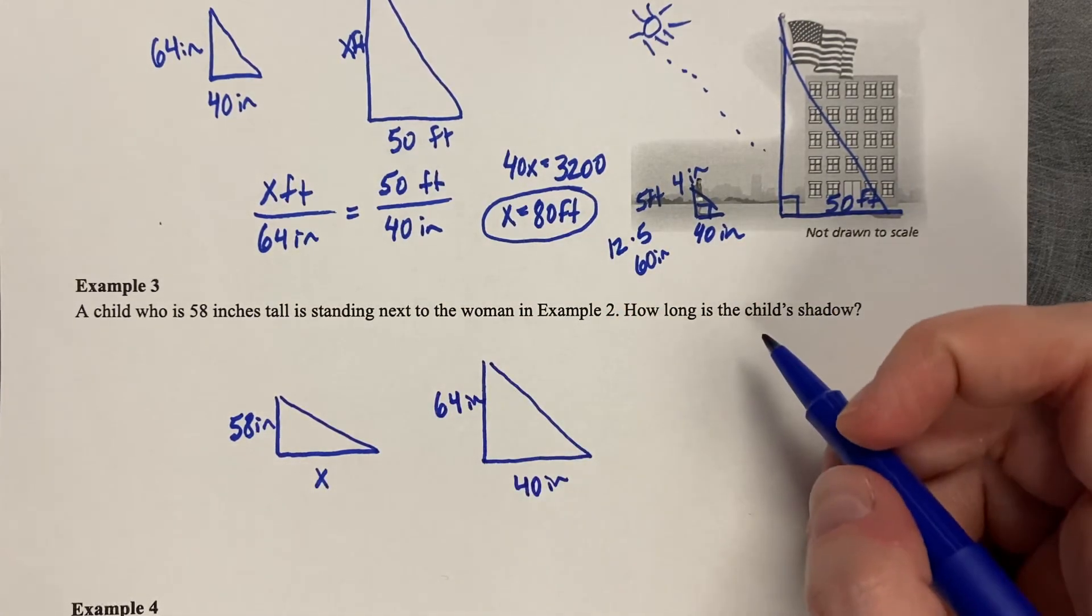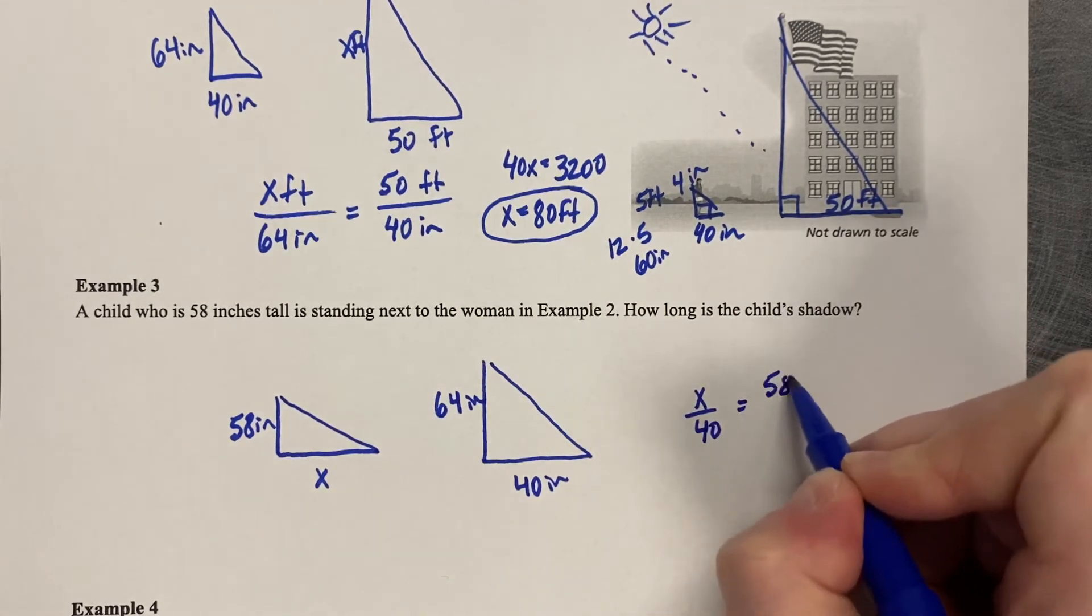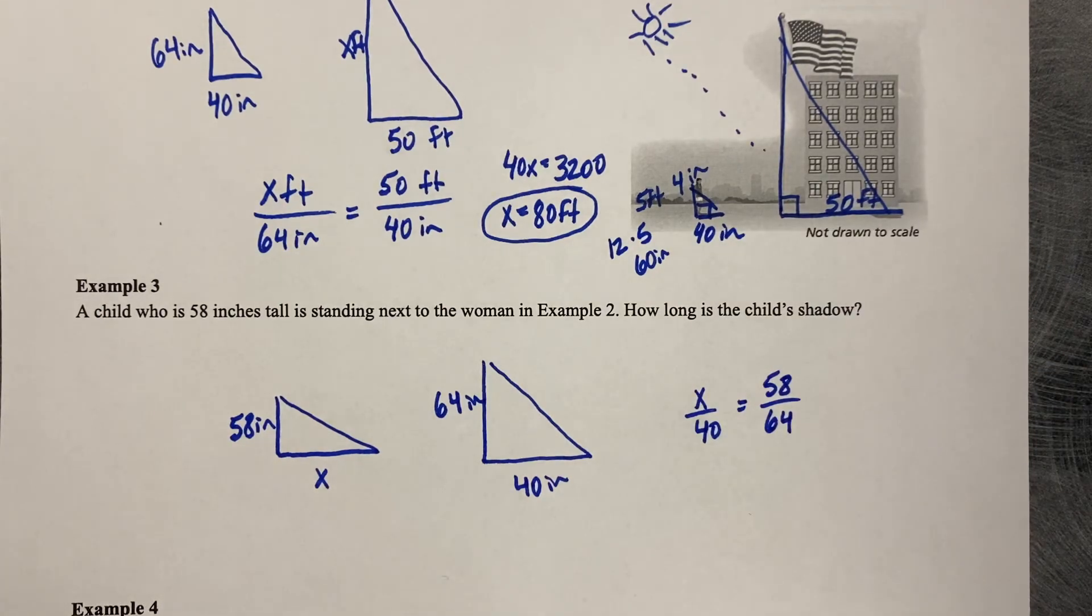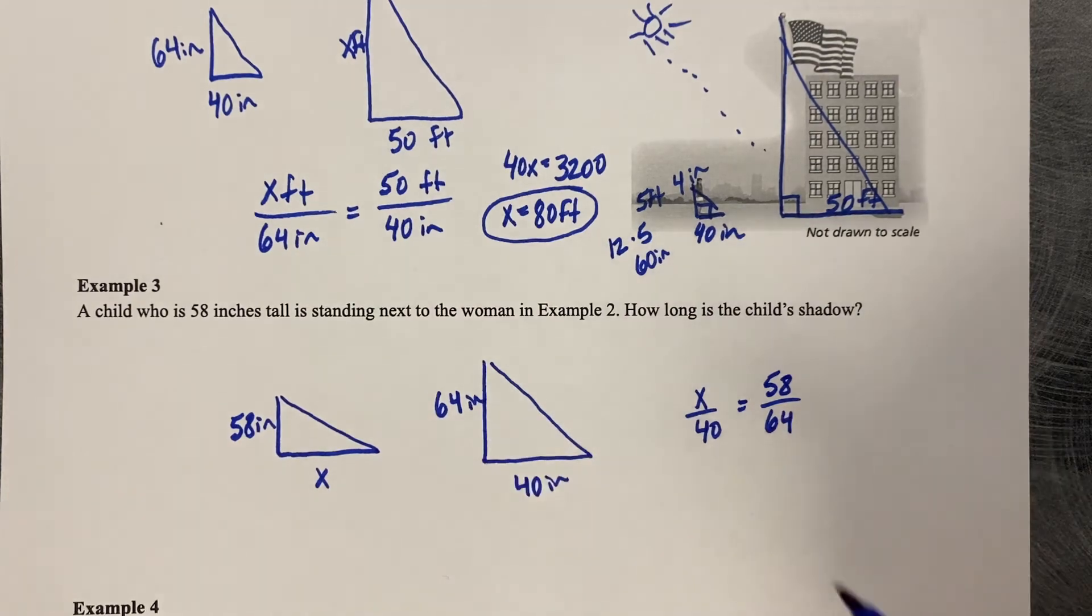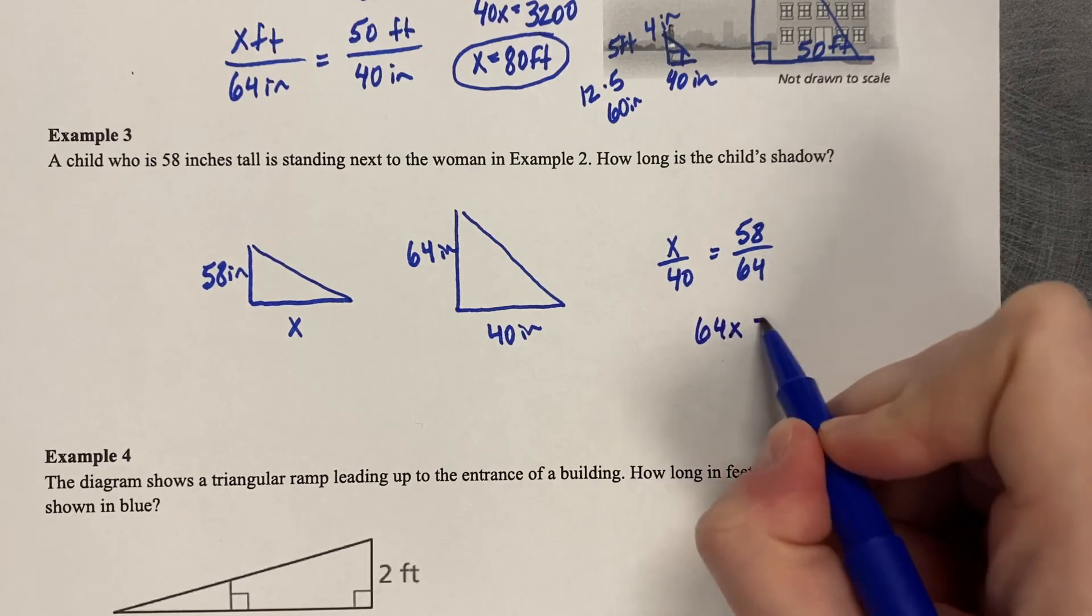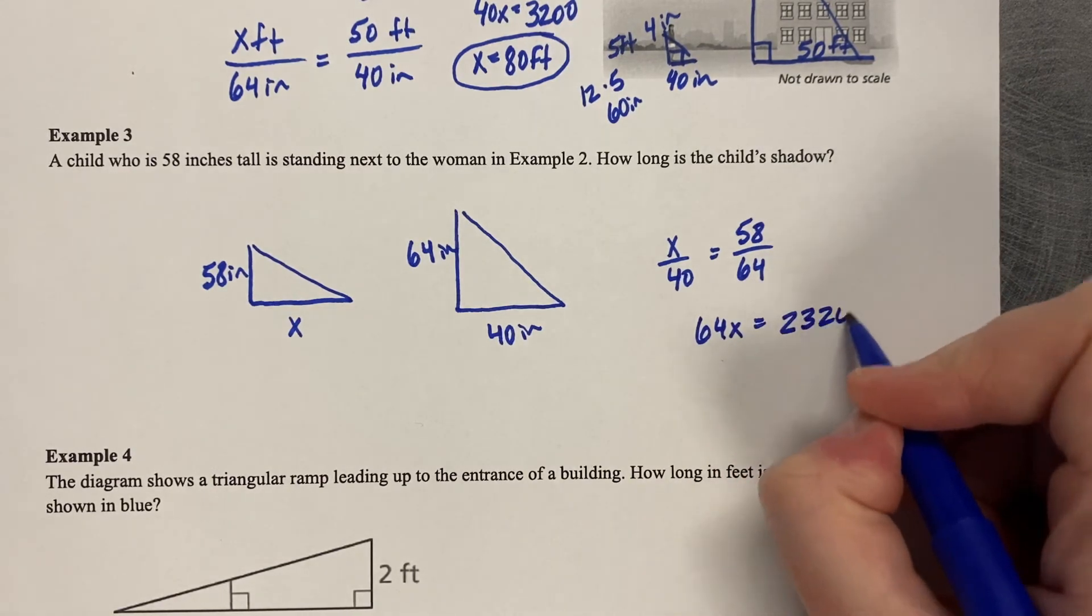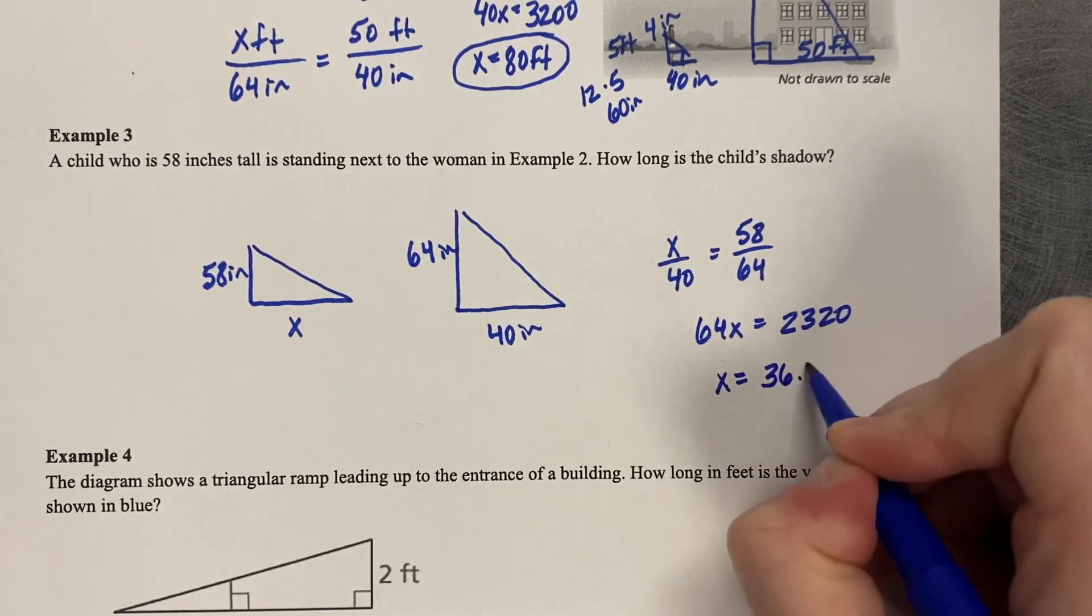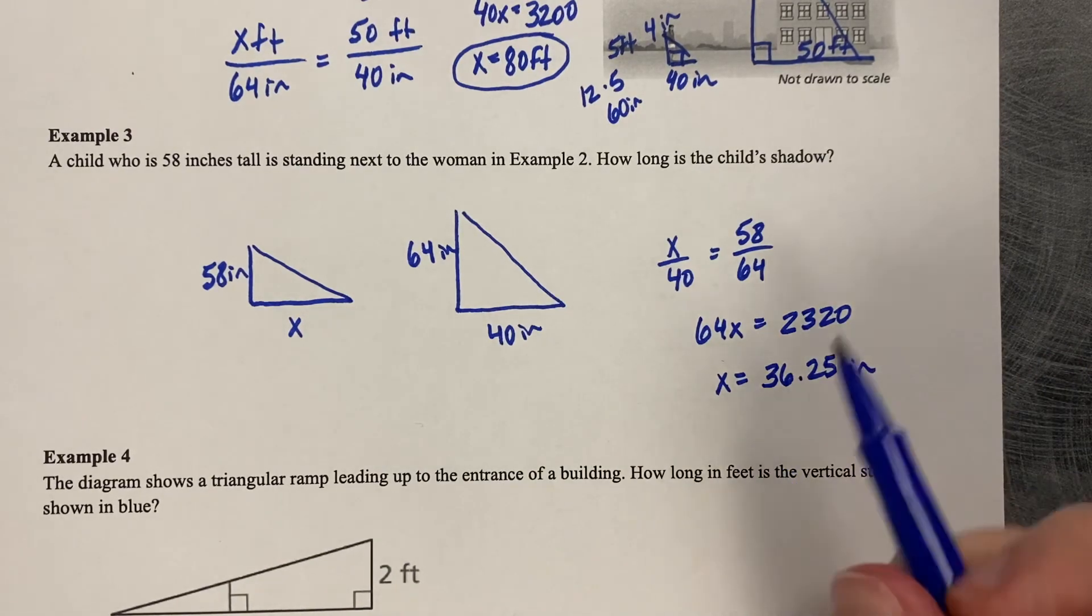And now we just set up our proportion and solve. So X compared to 40 as 58 is compared to 64. You could do that differently. You could do X is to 58 as 40 is to 64. You have choice. X times 64 is 64X. 58 times 40 is 2320. Divided by 64 is 36.25 inches. So 36 inches and a quarter.